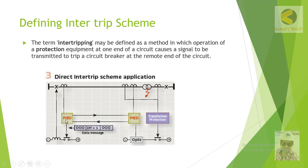This type of scheme is called a direct transfer trip scheme. If there is a fault at substation B and there is no breaker locally, we want to immediately trip the feeding breaker at the remote station. Through the protection device, a signal is transmitted and as soon as the signal is received, it trips the breaker at the remote end to cut the fault current.